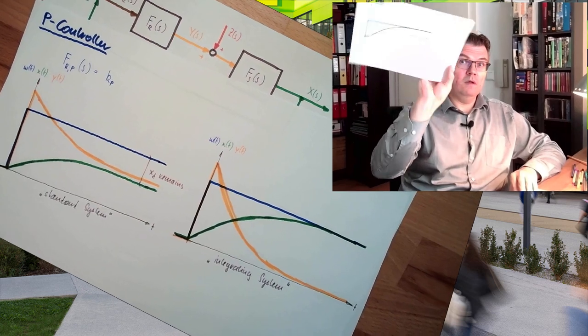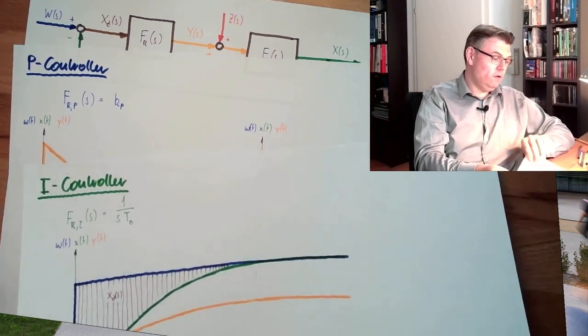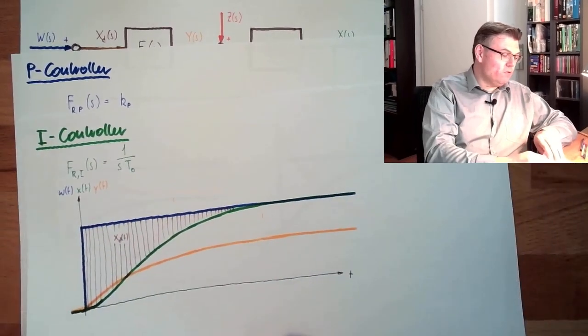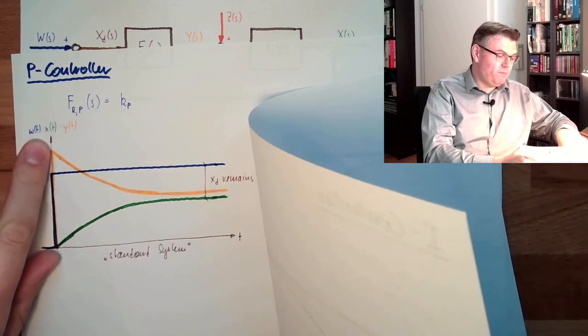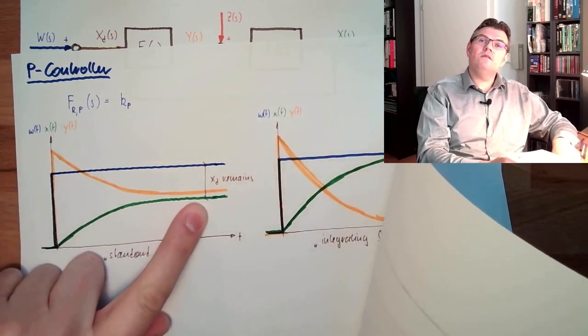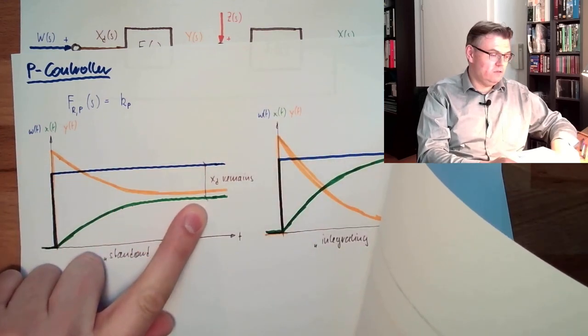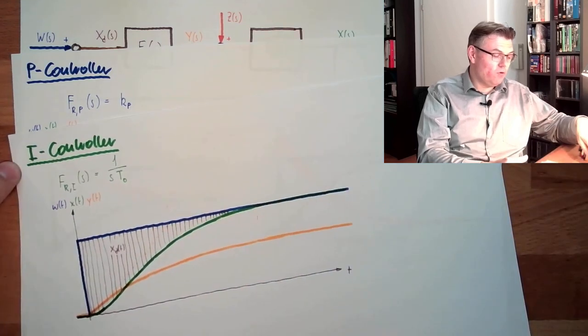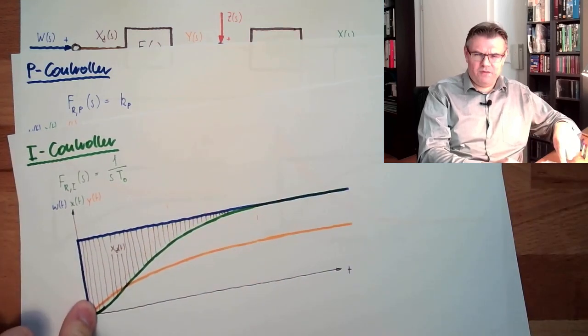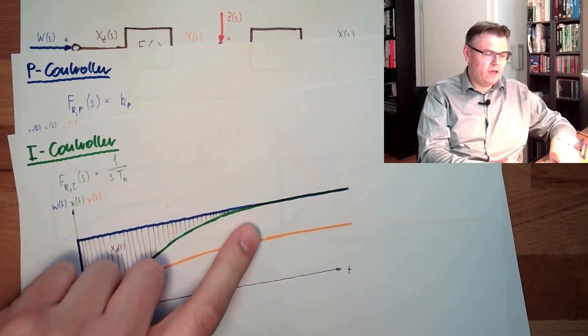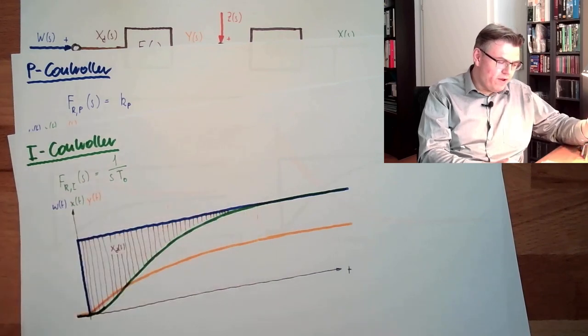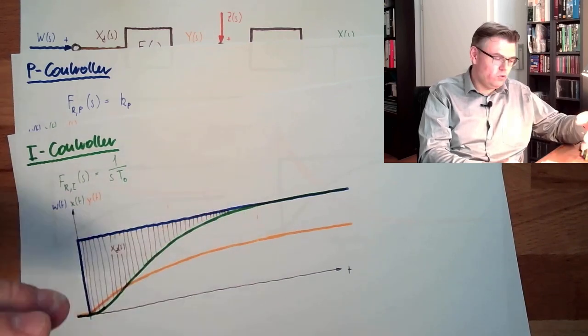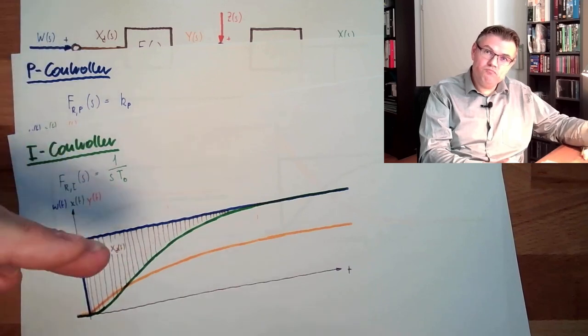And we also had this one, the I-controller. And we said the P-controller is pretty fast at the beginning and in the end it looks like it just doesn't care. We said the I-controller, in the beginning there is nothing happening and in the end it's going to be very, very accurate.